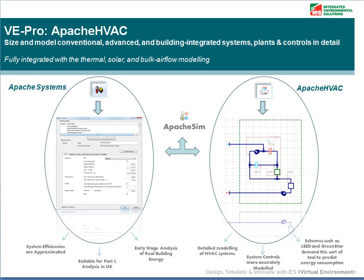The Apache Systems were developed for the PowerDell analysis in the UK. These Apache systems are fine for early stage analysis of your real building energy loads, as you can predict the building load using Apache Sim and then apply the factors input in Apache Systems to predict the energy consumption of the building and therefore the CO2 emissions.